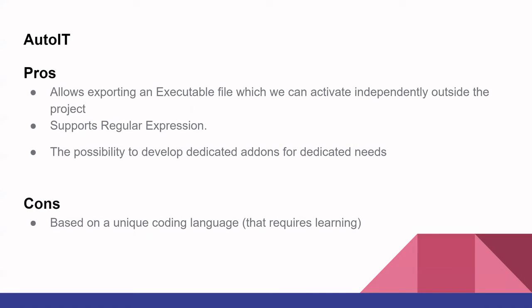Sixth in our list is AutoIT. AutoIT is a standalone, small footprint tool that simulates mouse and keyboard clicks. It activates the binary files of the tested app using reflection. AutoIT comes with a dedicated IDE and is compatible with recordings and coding in its own scripting language, which is very similar to Basic syntax. Some of the main pros of AutoIT are: it allows exporting an executable file which can be activated independently outside the project, supports regular expressions, and offers the possibility to develop dedicated add-ons for specific needs. The only con is that it is based on a unique coding language that requires learning.